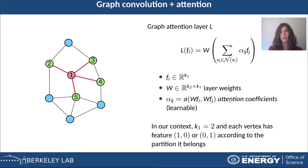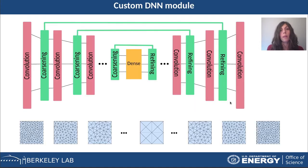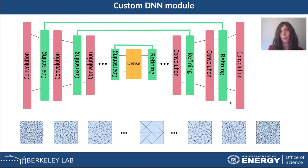These graph attention layers are very important because they capture local properties of the graph, but they are not enough, especially for large graphs, because we also want to take into account global properties of the graph. Our idea was to introduce another tool — a deep neural network module that sits inside the agent network — that is able to capture this feature.